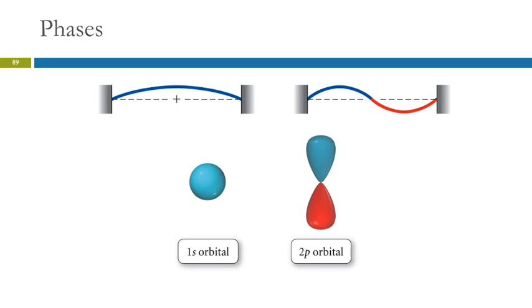But here are the phases. So an s orbital - blue is representing positive and red is representing negative. So here this s orbital is in the positive phase. The 2p orbital has one lobe in the positive phase and one lobe with the negative phase.